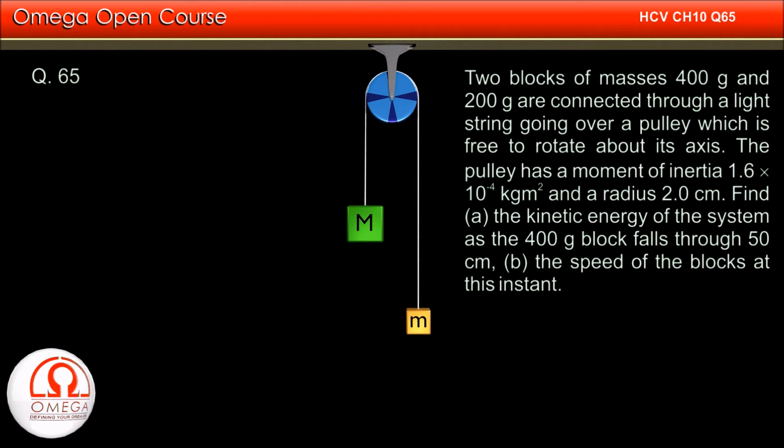Two blocks of mass 400 grams and 200 grams are connected through a light string going over a pulley which is free to rotate about its axis. The pulley has a moment of inertia 1.6 × 10^-4 kg·m² and a radius of 2 cm.